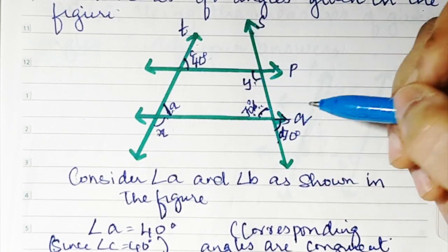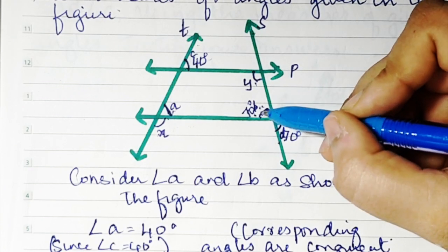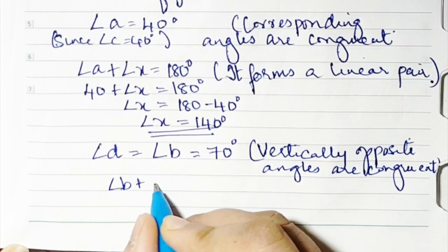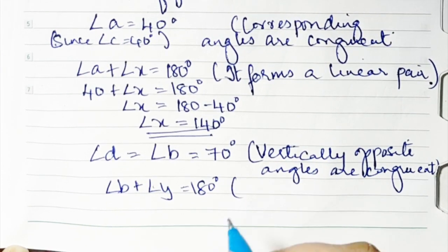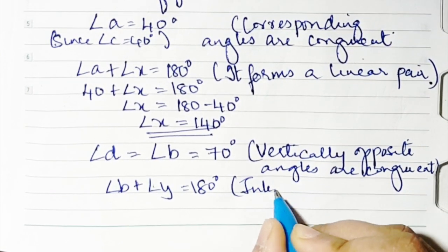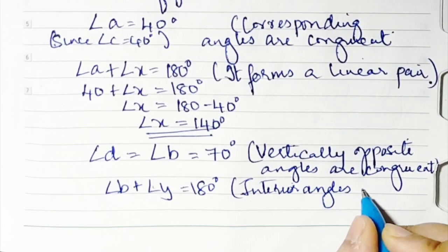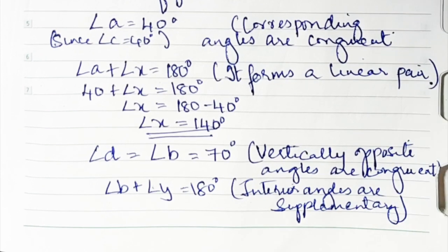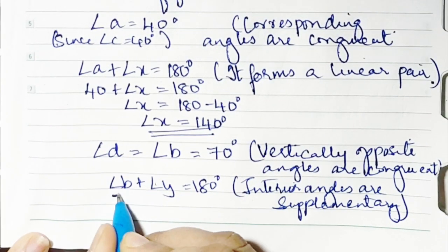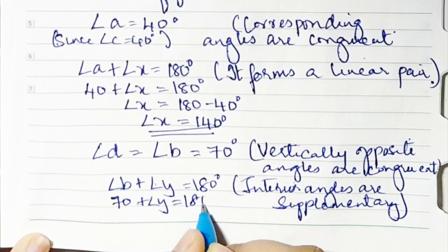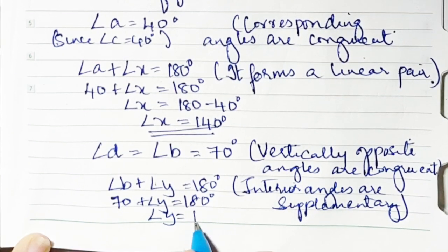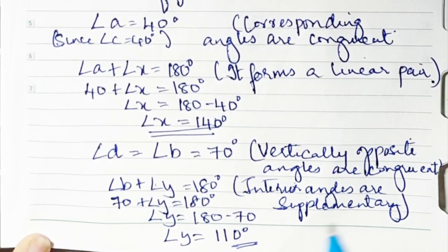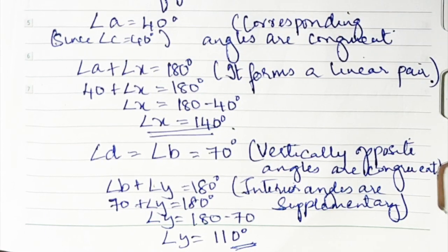Vertically opposite angles are congruent. So b is 70. Now b and y become interior angles and interior angles are supplementary, forming 180 degrees. So angle b plus angle y is equal to 180 degrees. Since b is 70, we have 70 plus y equals 180, so y is equal to 180 minus 70. Angle y is 110 degrees. So x is 140 and y is 110 degrees.